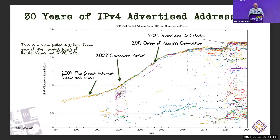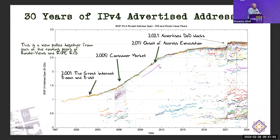Let's look at a different metric — the amount of address space in total, the span. Now you see a completely different story. The great boom and bust didn't mean anything. The consumer market did, but the onset of address exhaustion really did impact the way we build networks. There was a minor rush to get addresses before IANA ran out, but as it plateaued off, there have been no new addresses in the routing system. There's also an awful lot of noise in addressing span, because a bunch of peers of Route Views and RIS don't actually send their complete tables — they just send sub-views.